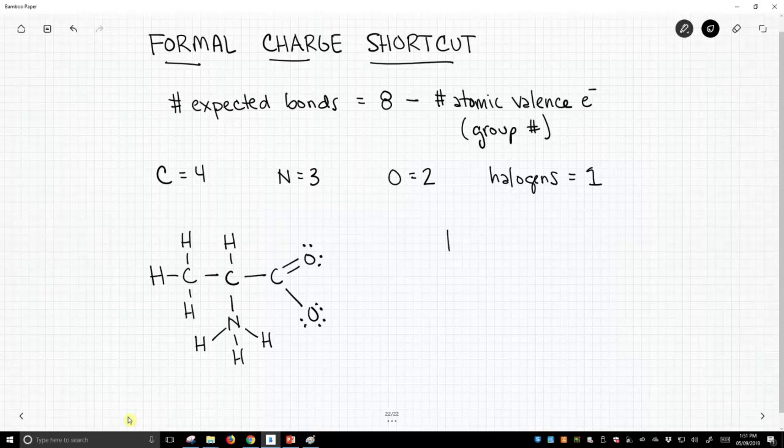Now if an atom has too many bonds, if it exceeds this expected value, then it's going to have a positive charge, typically positive one. Other charges are possible, but it's rare for things to form more than one bond than expected. If it has too few bonds, it's going to have a negative charge.